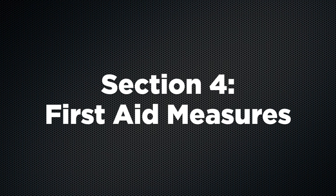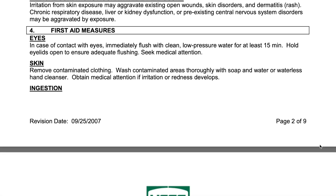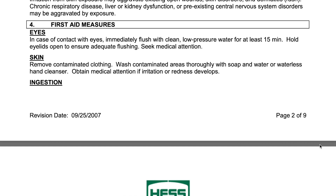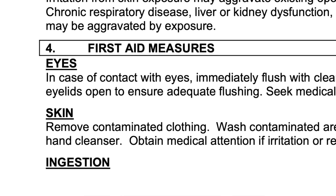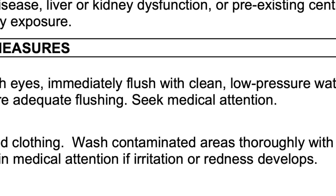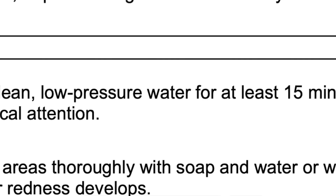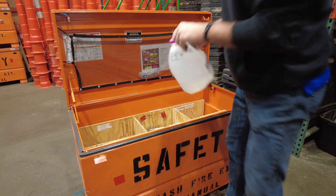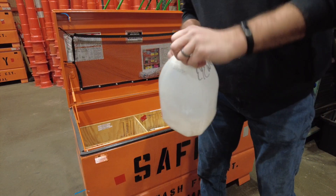Section four: First Aid Measures. If you're exposed in a harmful way to the chemical, or if the chemical makes contact with your body, how should you respond and treat it? In the case of gasoline, if it makes contact with your eyes, immediately flush with clean, low-pressure water for at least 15 minutes. By the way, that's what the two gallons of distilled water are for in the safety boxes — at least you've got something to get started with. Make sure your eyes are completely flushed clean.